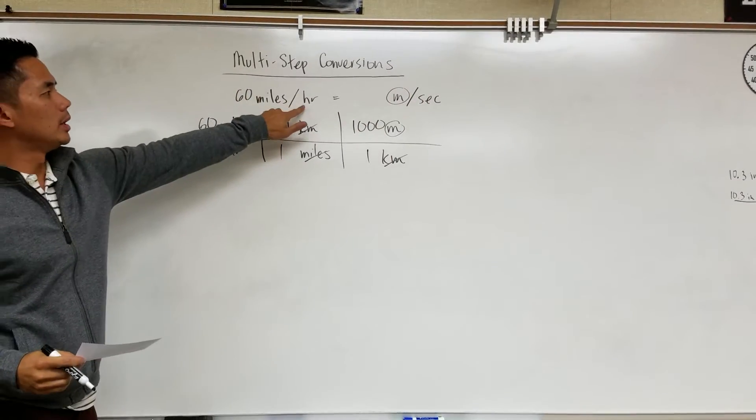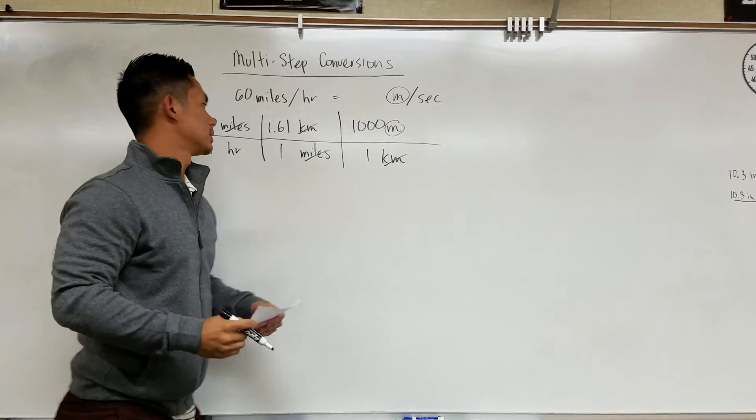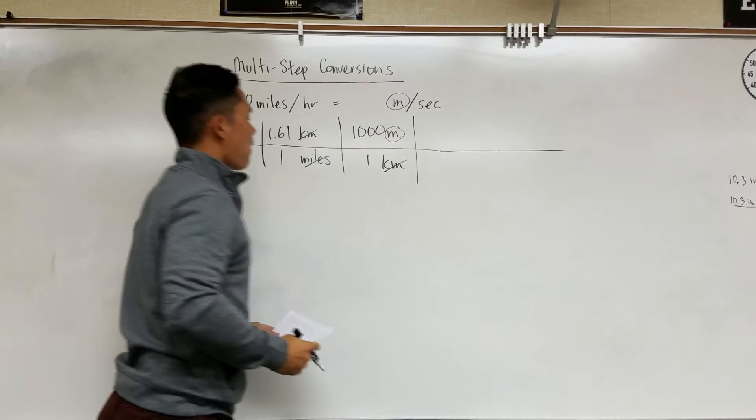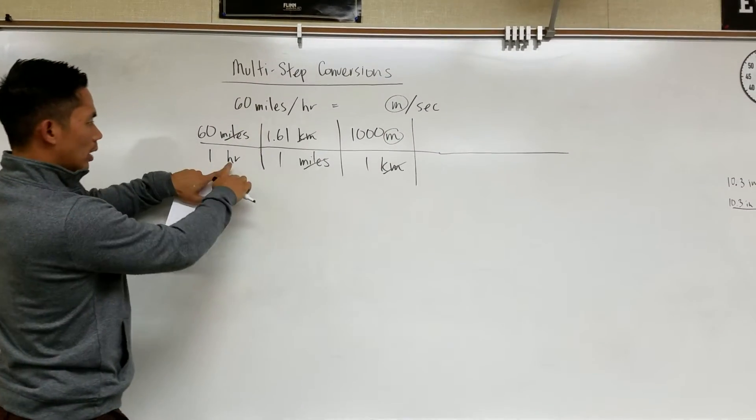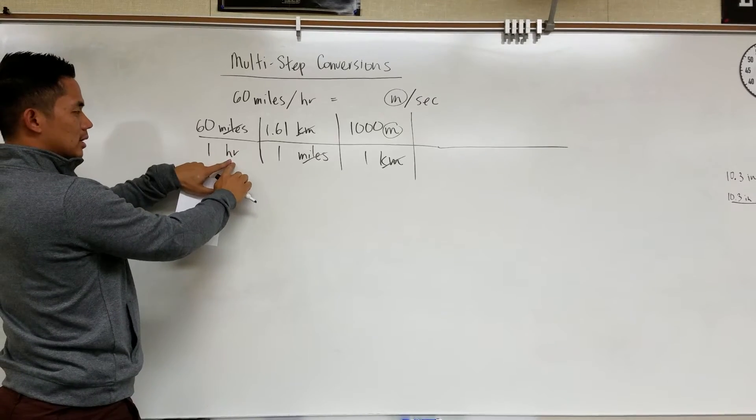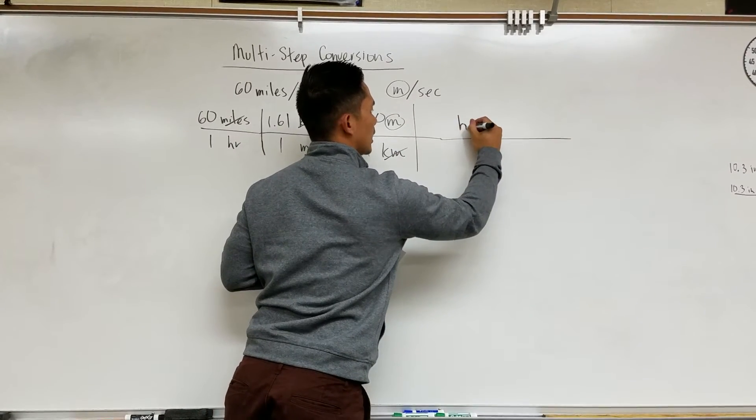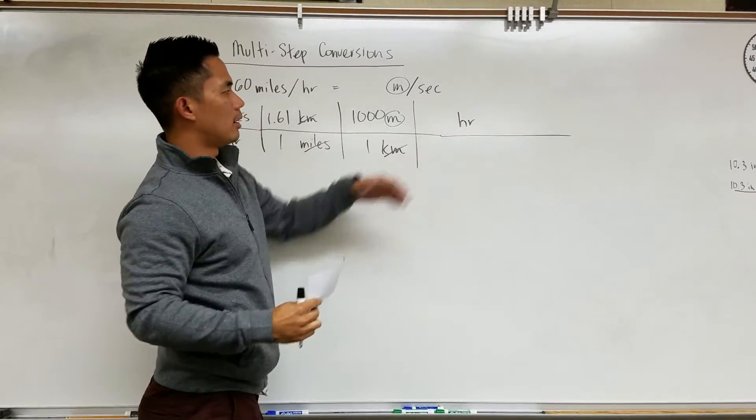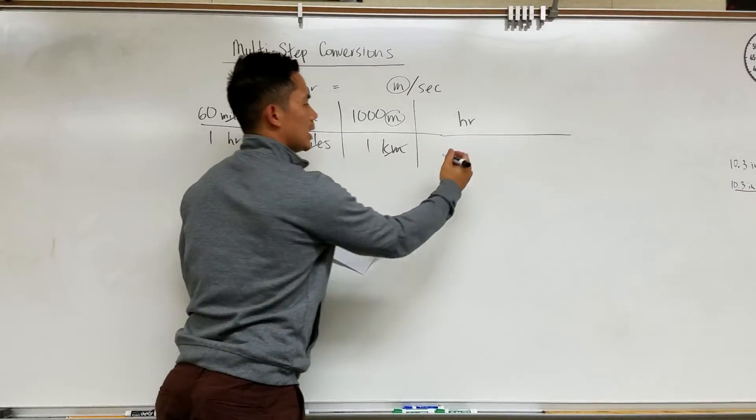But we need our hours to turn into seconds. So this makes us extend. So now we want to get rid of hours. So since hours is on the bottom we want to write hours on top. And I know that there are 60 minutes in an hour.